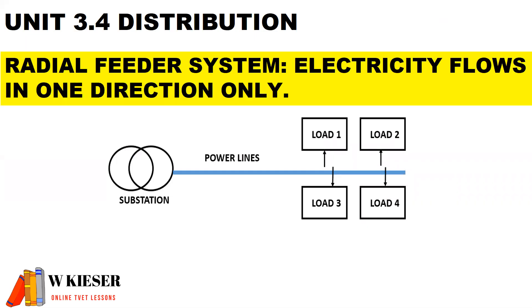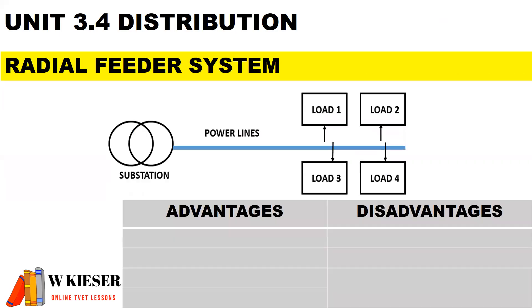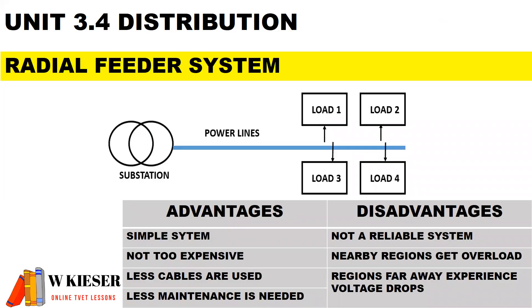For the radial feeder system, electricity flows in one direction only from the substation. There is one single power line supplying different loads, which could be industrial or commercial consumers. The advantages are that it is simple, not too expensive, less cables are used, and less maintenance is needed. However, the disadvantages are that it is not reliable, nearby regions get overloaded, and regions far away experience voltage drops.